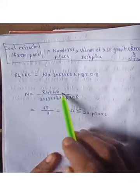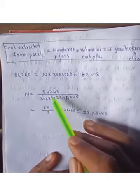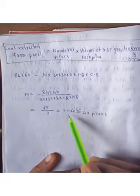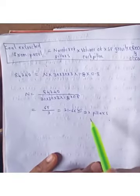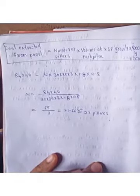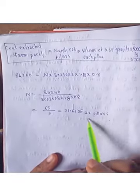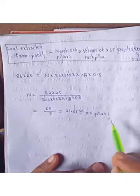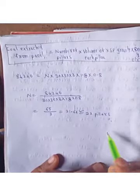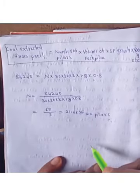On calculating this, we get 21.60, which is similar to 22 pillars. So in that coal panel we have 22 pillars, and we can extract 22 pillars within the incubation period of 9 months. Thank you guys for watching the video. If you have any doubts, comment in the comment section.